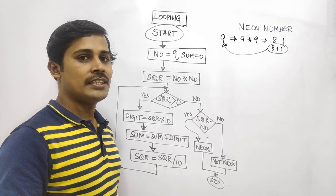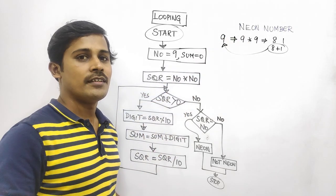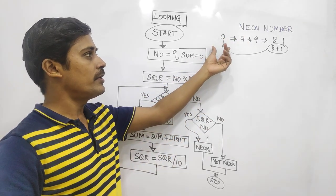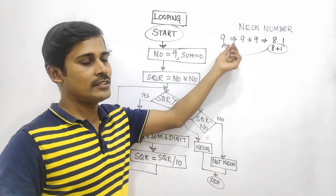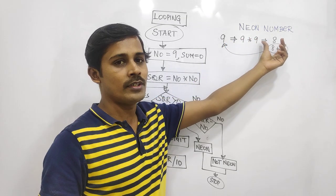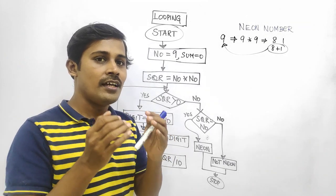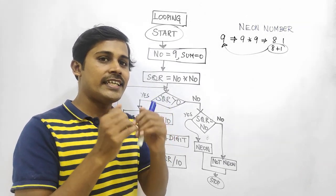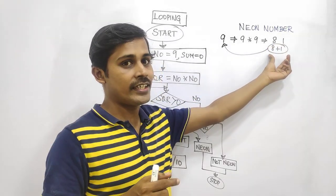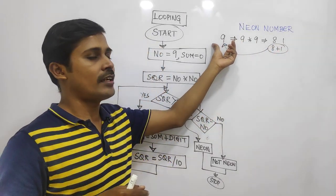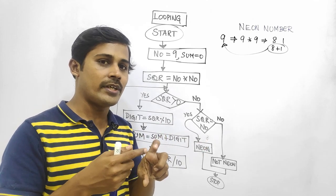In our programming series, we will see the neon number program. We will find neon numbers. First, we take a number and compute its square. For example, the square is 9, and 9 squared is 81. We add the digits 8 plus 1 equals 9 — that is the same number. So that is the neon number. We take a number, find its square, and add the digits of the square.